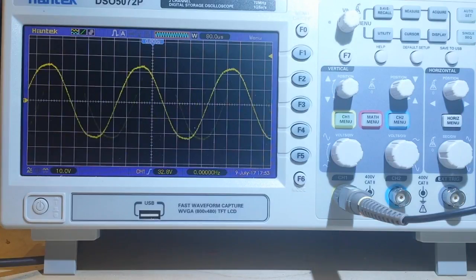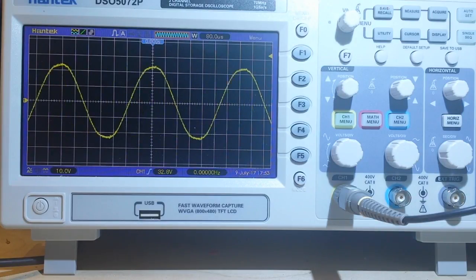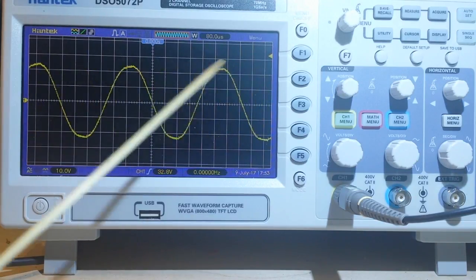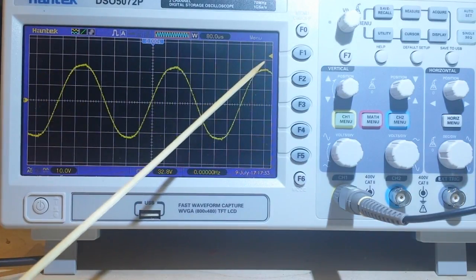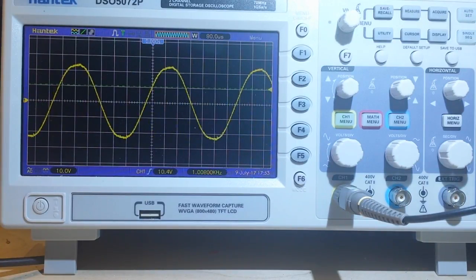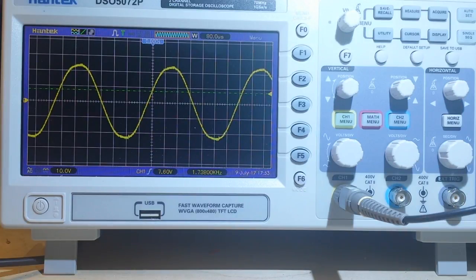So what we have here is an untriggered sine wave, but if I bring our trigger, and that's this little yellow triangle here, down into some point within the waveform, you see how we now have a stable waveform.